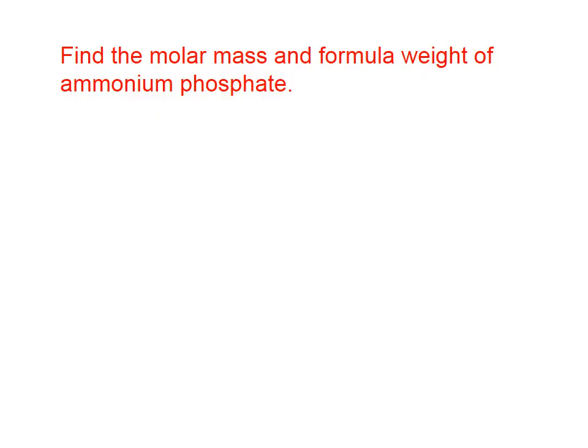Okay, let's try a problem. Find the molar mass and formula weight of ammonium phosphate. To do this, we need to know the formula of ammonium phosphate. We recall that the ammonium ion has that formula. The phosphate ion has that formula. The ratio is 3 ammonium ions for every phosphate ion.